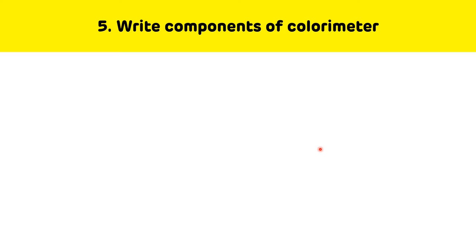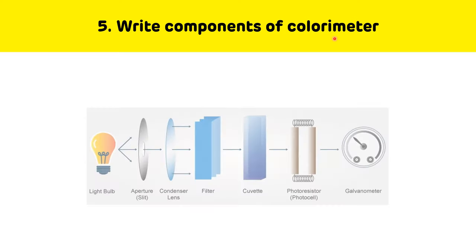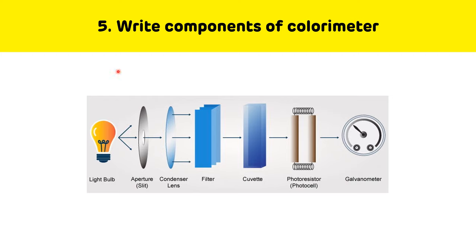Fifth question: write the components of the colorimeter. The components of the colorimeter are: light bulb, slit, condenser lens, filter, cuvette, photoresistor, and galvanometer.